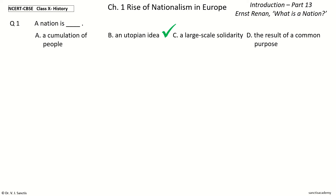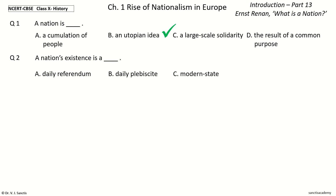Question 2. A nation's existence is a dash. The options are: daily referendum, daily plebiscite, modern state, modern idea. And the answer is daily plebiscite. So, a nation's existence is a daily plebiscite.